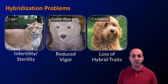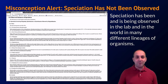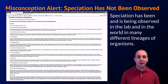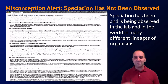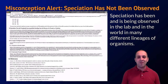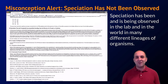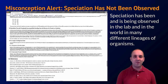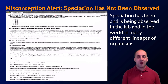Those are our postzygotic barriers. I want to pause here and address one quick misconception: the idea that speciation has never been observed. Speciation absolutely has been observed, and it's being observed right now, both in the lab and in the wild across many different lineages of organisms. There's a website I'll link to that lists all observed or documented speciation events. If you ever hear somebody say that nobody's ever seen speciation occur, they are incorrect.